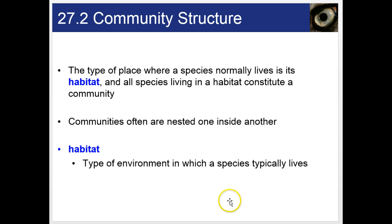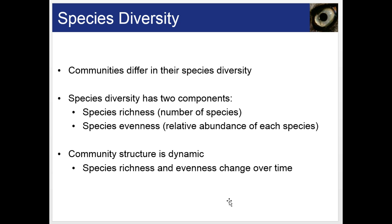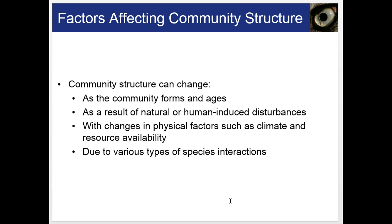Communities differ in their species diversity, which has two components: species richness, which is the number of species, and species evenness, which is the relative abundance of each species. Community structure is dynamic, and species richness and evenness change over time. Community structure can change as the community forms and ages as a result of natural or human-induced disturbances, changes in physical factors like climate and resource availability, and due to various types of species interactions.